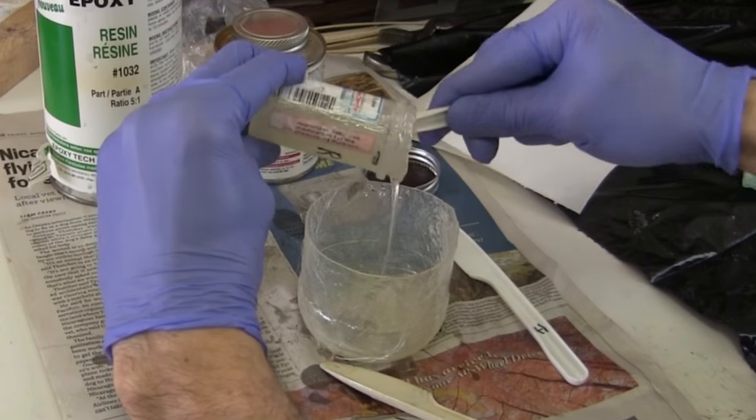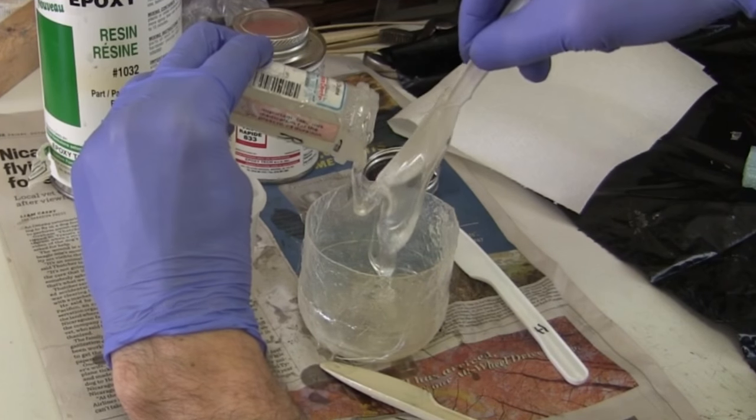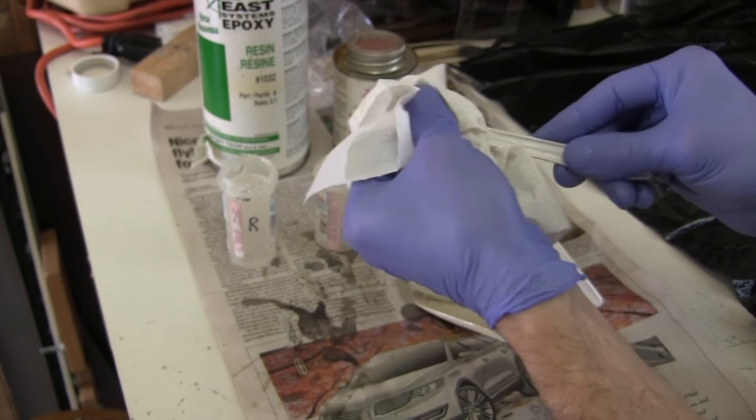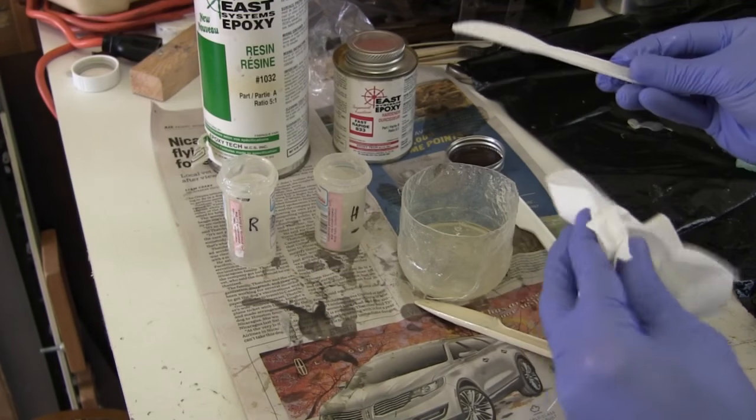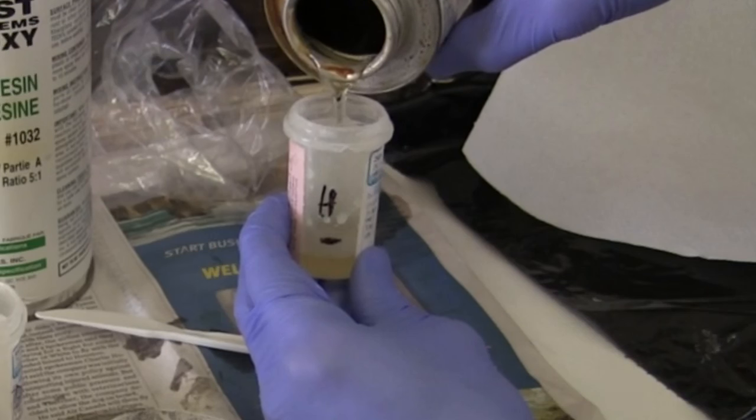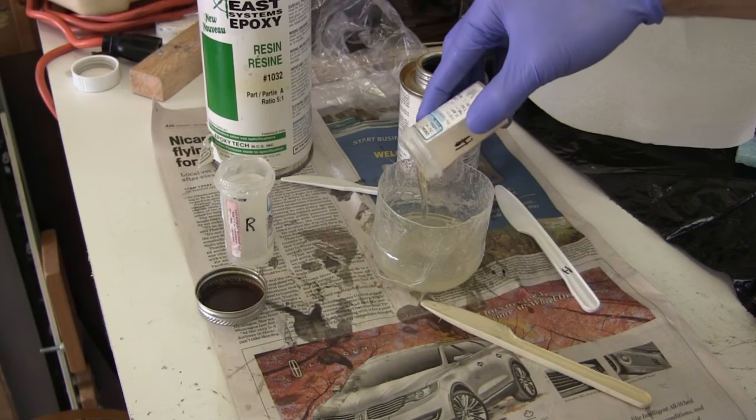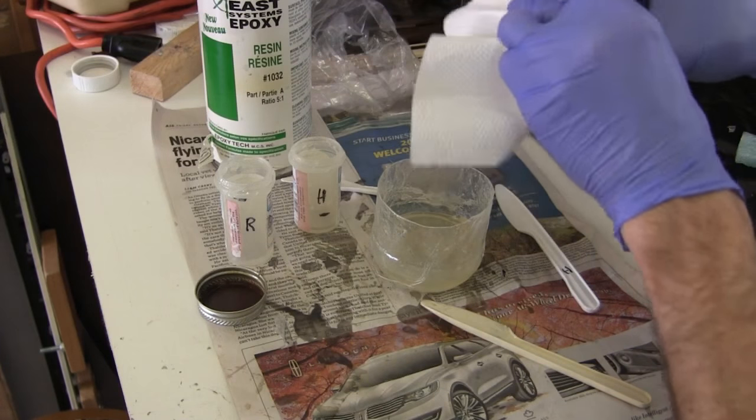Then I pour it into the mixing container. Notice that this one is a very thick or low viscosity resin. I clean up with a paper towel and throw it out so I won't accidentally use the same paper towel on my hardener parts.